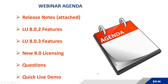Our webinar agenda: release notes are already attached in GoToWebinar and downloadable at any time. We'll sequentially cover the Latitude 8.0.2 features followed by the 8.0.3 features — there are quite a few more 8.0.2 features. After that we'll discuss 8.0 licensing, which is different from 7.0 and prior licensing. It's a simple couple-step process we'll walk right through.